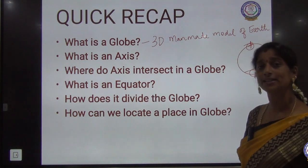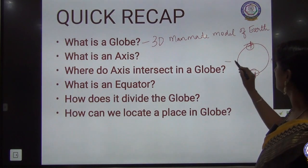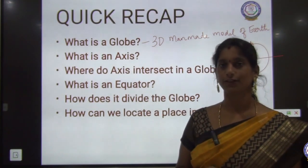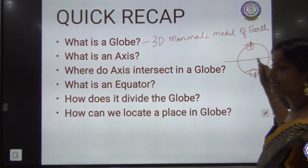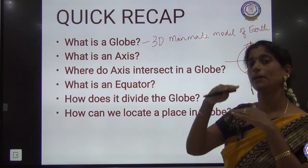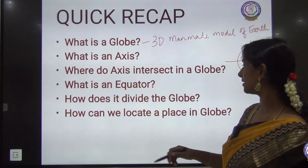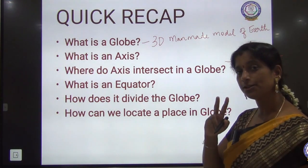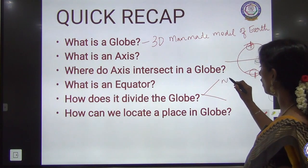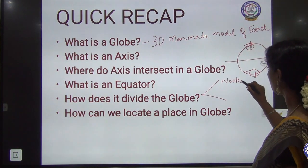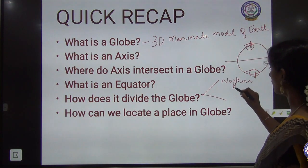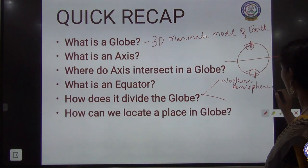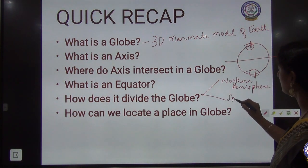What is an equator? The equator is the centermost horizontal parallel line of the globe — the center line which divides the globe into two halves. The equator divides the globe into the Northern Hemisphere and the Southern Hemisphere.